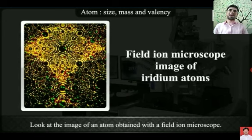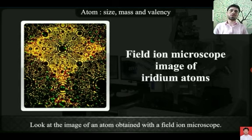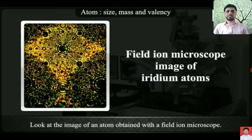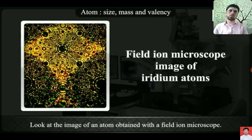The size of an atom is determined by its radius. The atomic radius of an atom is the distance between its nucleus and its outermost orbit, and it is generally expressed in nanometers. These atoms are very tiny, so we require modern instruments like microscopes such as the electron microscope.